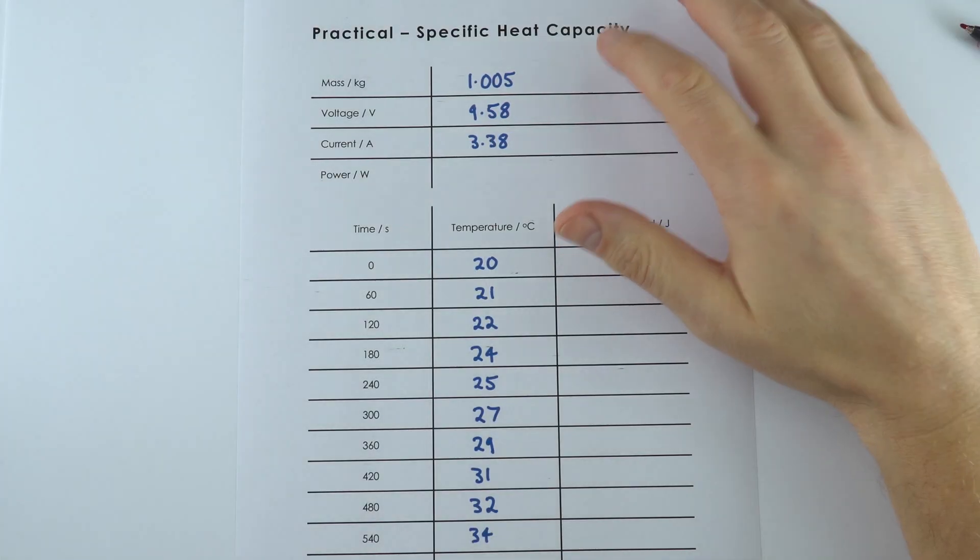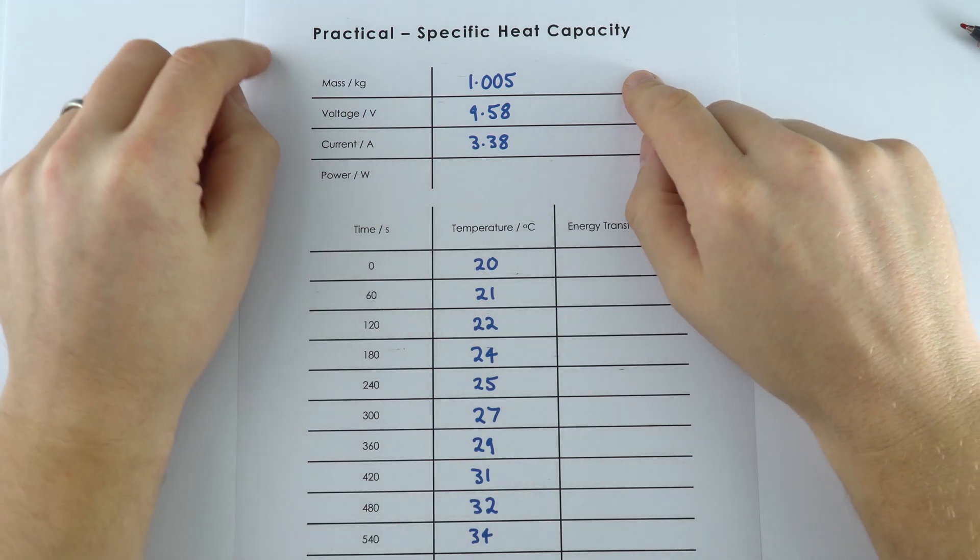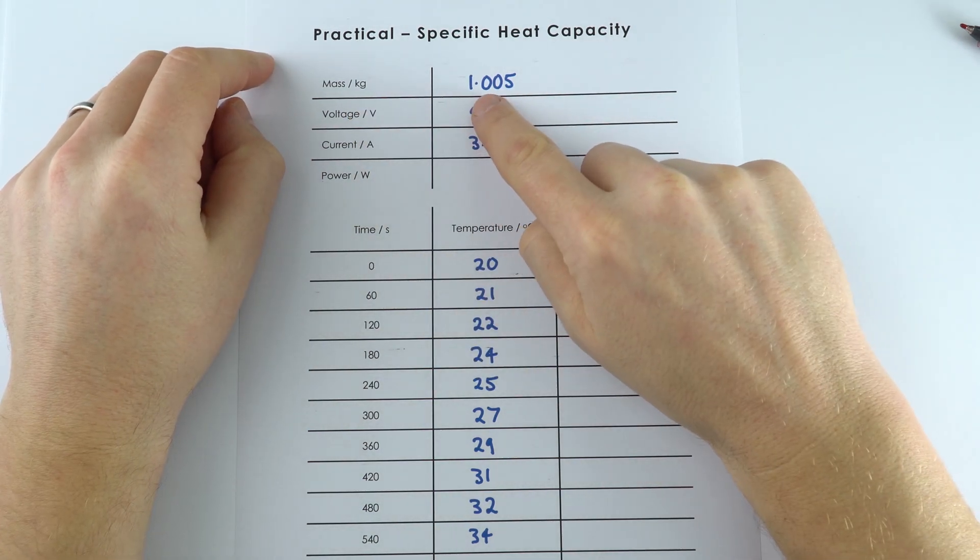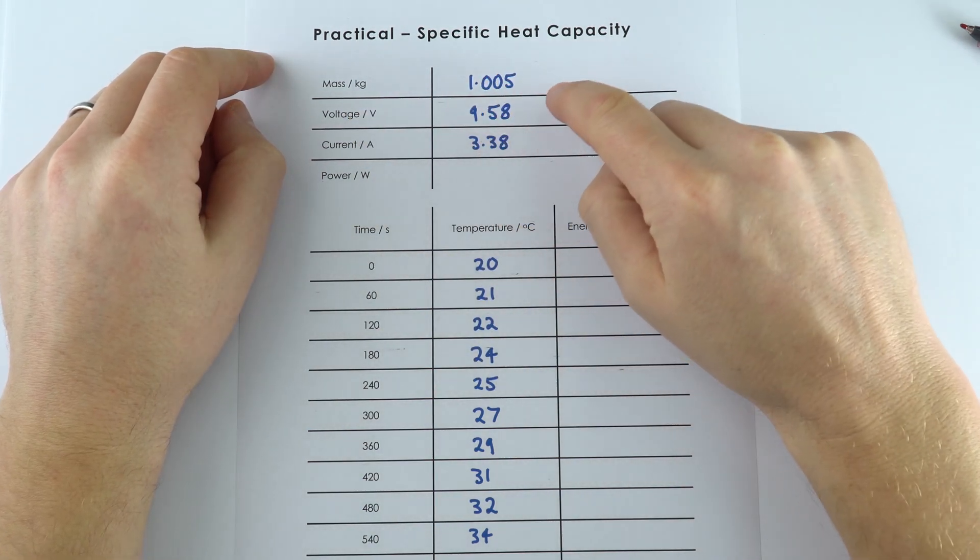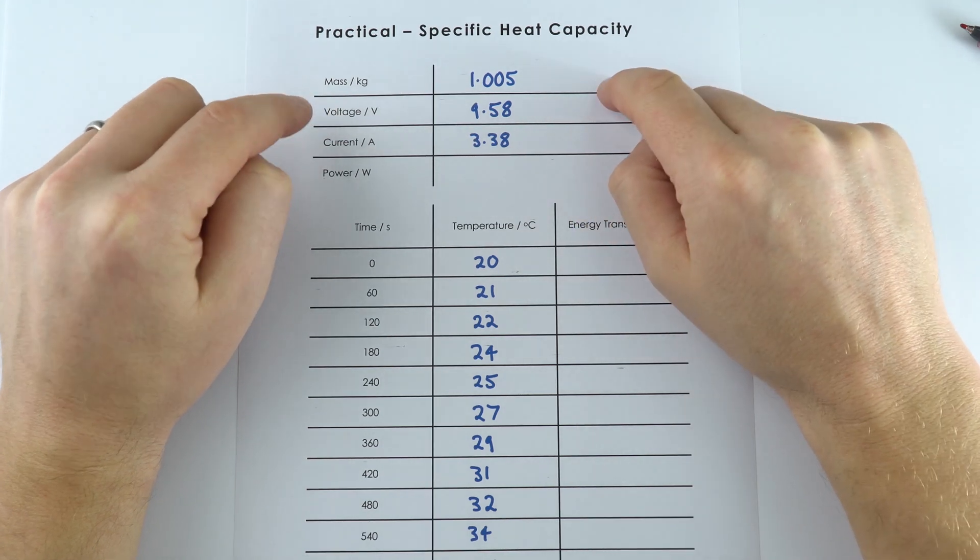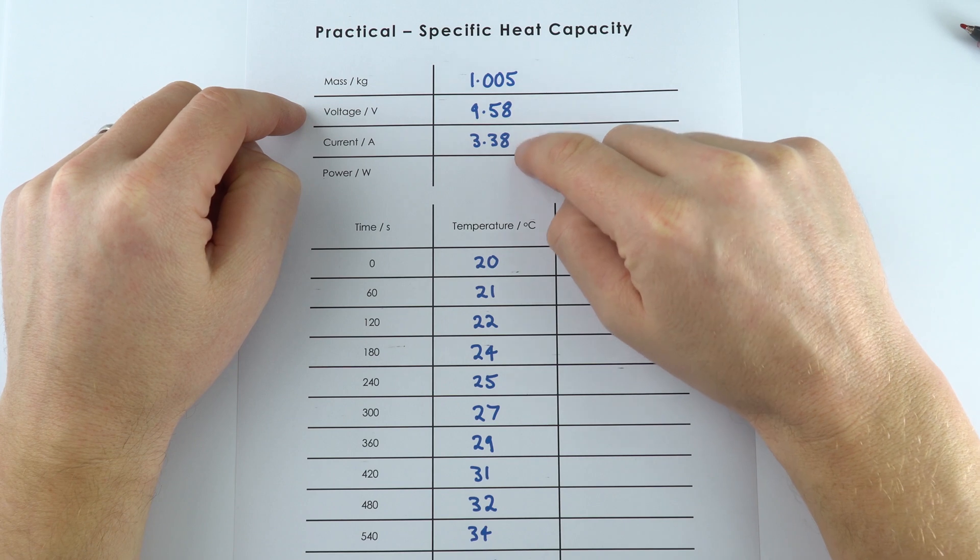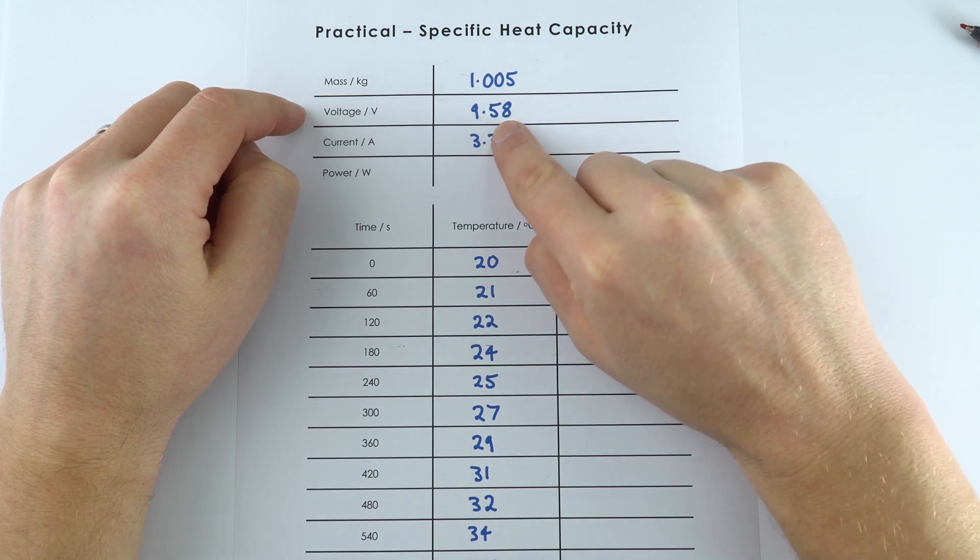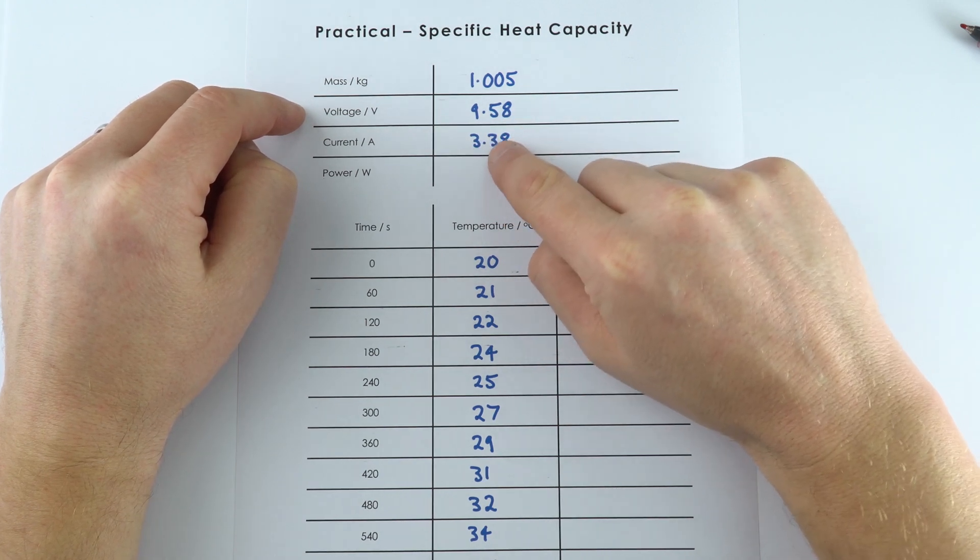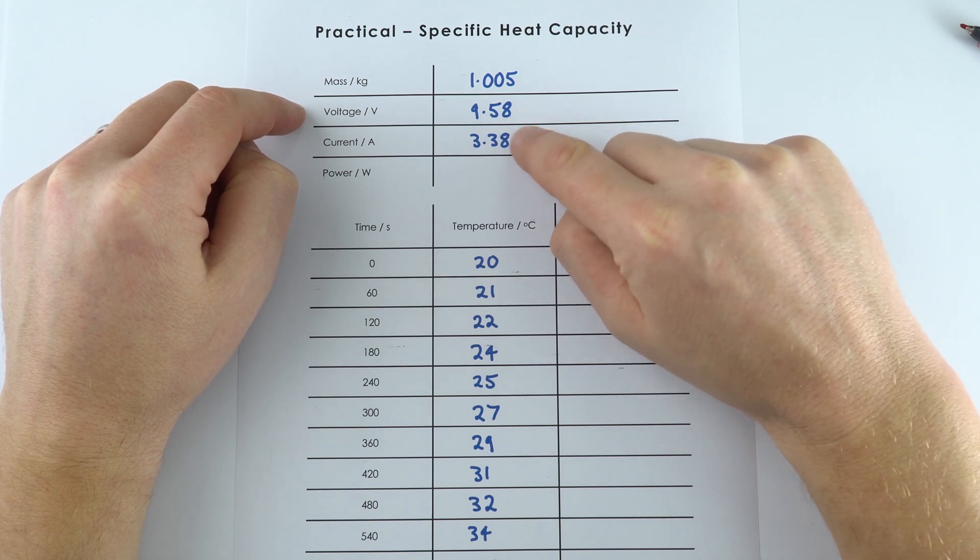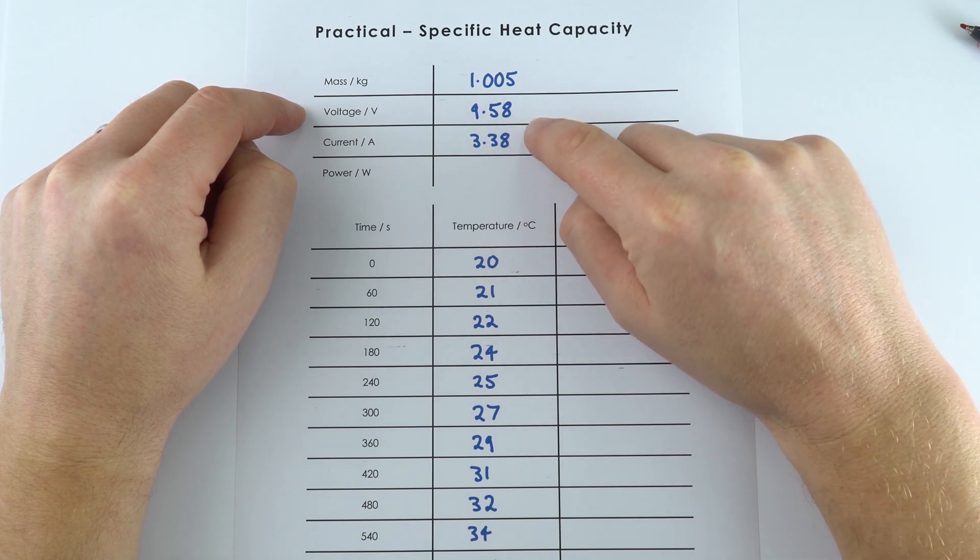So when I heated up my piece of aluminum, these are my results. We had a mass in kilograms of 1.005. The values for the voltage or potential difference and the current fluctuated very slightly, but I basically took these values. Now I could have chosen maybe 9.59 or 3.39, but I decided to go for these because it seemed to be these values for the longest amount of time.